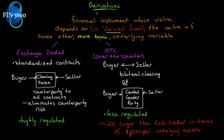It is derived from some other more basic underlying variable. 'More basic' means that whatever the financial instrument is deriving its value from, that particular asset has a price closer to its own intrinsic value. For instance, if you have an option on a stock, the option derives its value from the stock price, but the stock price derives its value from the value of the company itself — it's next in line.